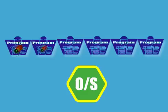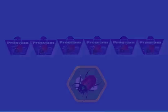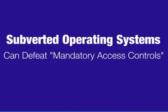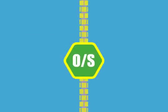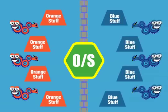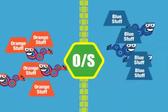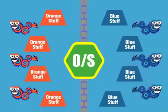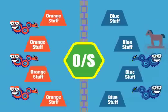Many programs contain flaws that can be exploited by maliciously constructed data, and this is no less true for programs that are supposed to provide a security function. Subverted operating systems can defeat mandatory access controls. Some operating systems enforce mandatory access control policies to control the flow of stuff within the computer by limiting which stuff a process can read and write. These operating systems can prevent a subverted process from reading and writing stuff in violation of the policy. So this kind of policy enforcement does not depend on the proper behavior of processes, as did the discretionary policy enforcement illustrated in the previous ACL example.